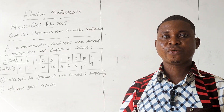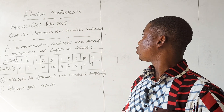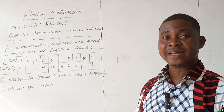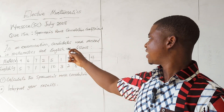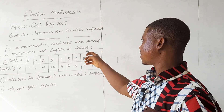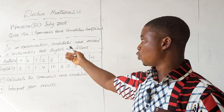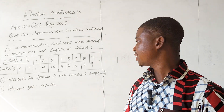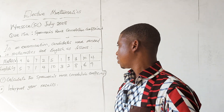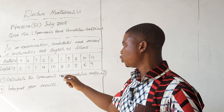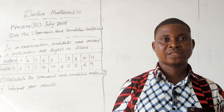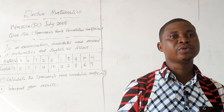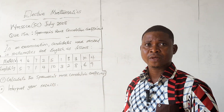Welcome to today's lesson. We are going to look at a 2008 July exam question — question 15a — on Spearman's rank correlation coefficient. In this question, candidates were ranked in mathematics and English as follows. From the table given, we are asked to calculate the Spearman's rank correlation coefficient, and then interpret our results. Interpreting means you are supposed to describe the relationship between the two subjects.